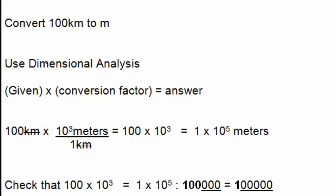Another way to check: 10³ equals 1,000, so 100 times 1,000 equals 100,000. And 10⁵ equals 100,000, so 1 times 10⁵ is also 100,000. Both agree.